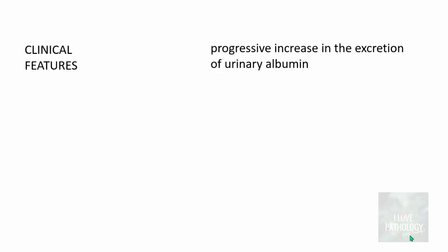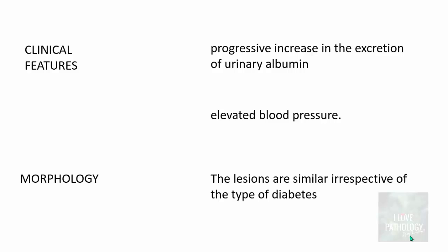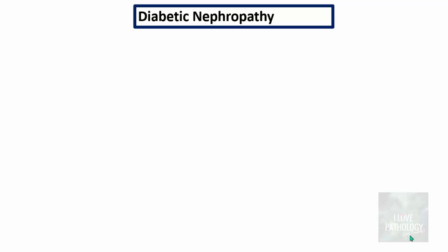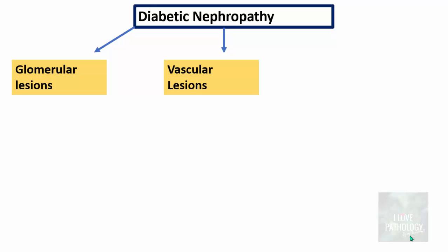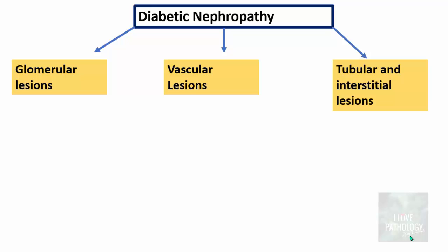Clinically, there will be a progressive increase in urinary albumin excretion and elevated blood pressure. The morphological lesions are similar regardless of whether the patient has type 1 or type 2 diabetes mellitus. The morphology includes glomerular lesions, vascular lesions, and tubular and interstitial lesions.